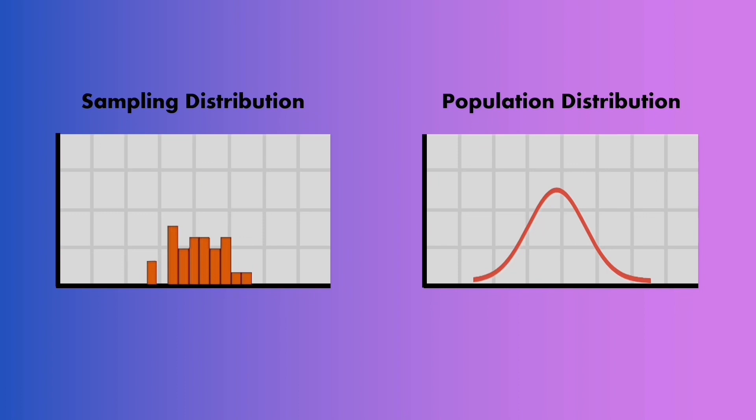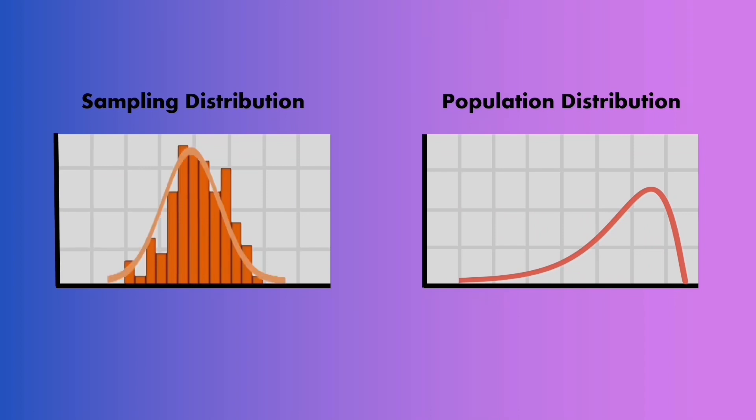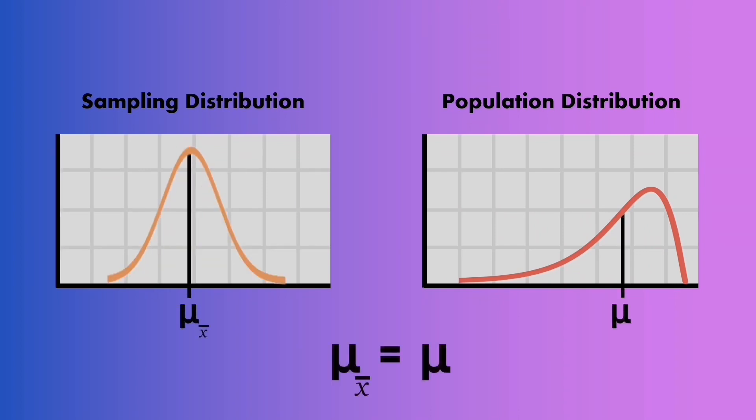We can generalize this by saying that as more sample means are added, the sampling distribution of any population, regardless of its skewness, will always converge to a normal distribution, whose mean is the population's mean.